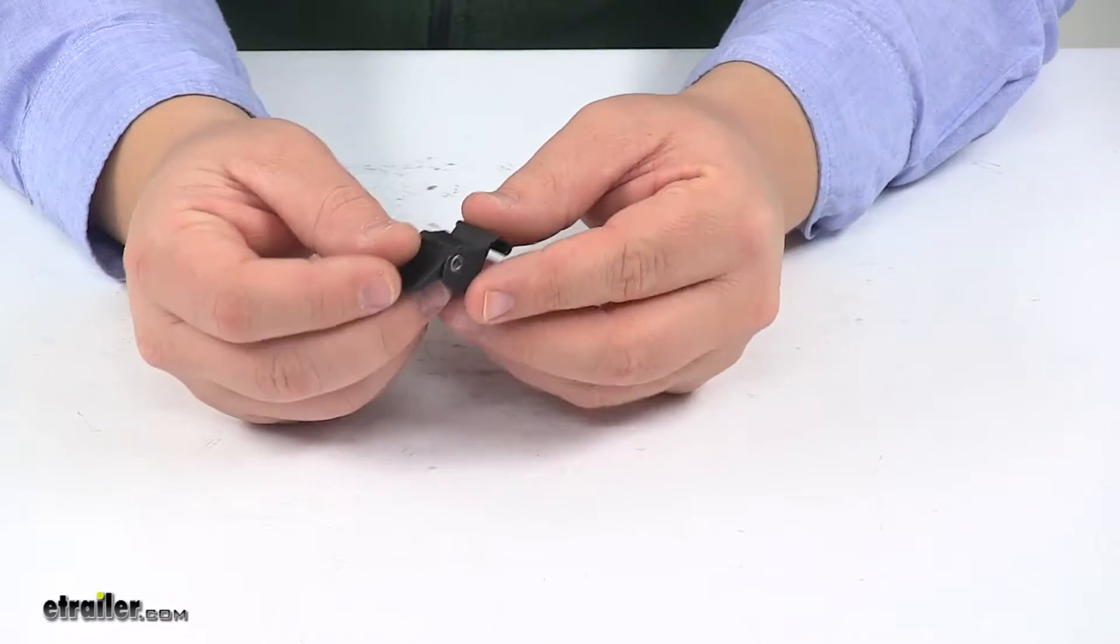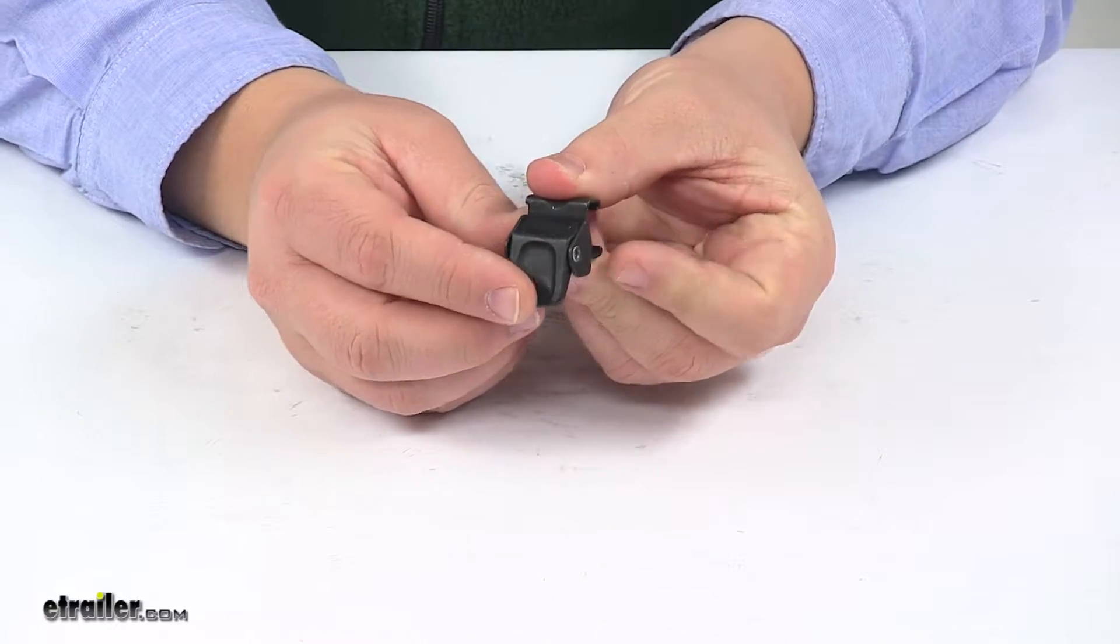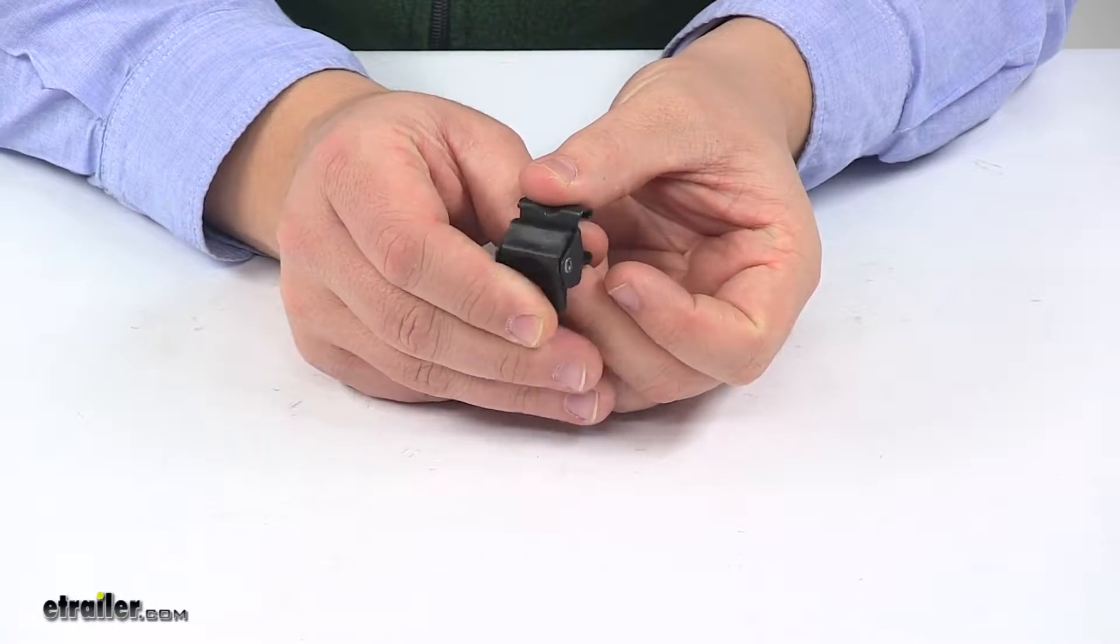Today we're taking a look at the replacement wheel strap button for the Thule Criterium roof mounted bike rack.